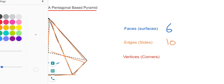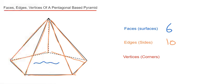And then finally we do the vertices. The vertices are the same as the corners. These are the sharp bits of the shape. So we've got one, two, three, four, five, six.